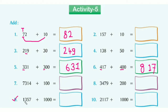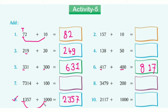Next example: 1357. We need to add 1000 to it. We keep all other digits the same and add thousands only: 1000 plus 1000 equals 2000. So the answer is 2357. Example number 10 you are going to solve yourself. I hope it is clear to you now.